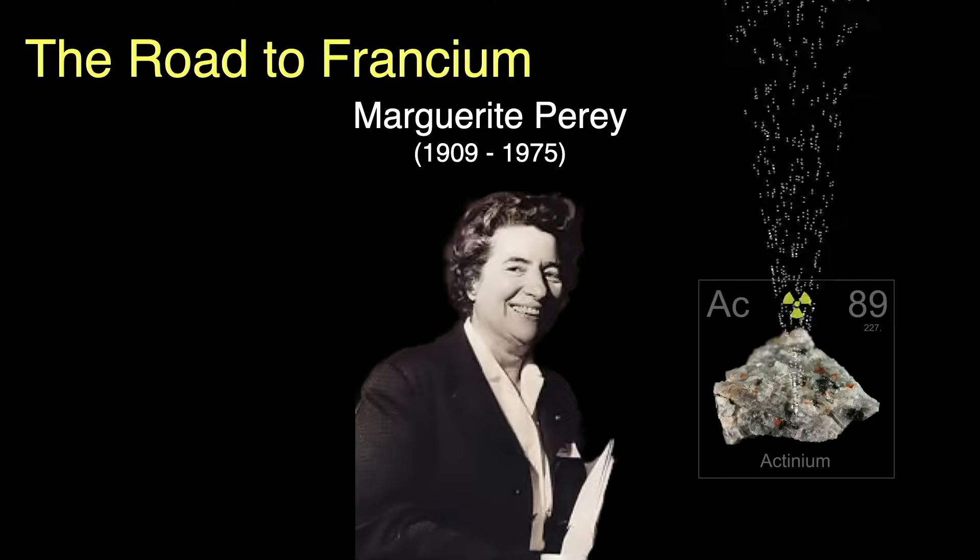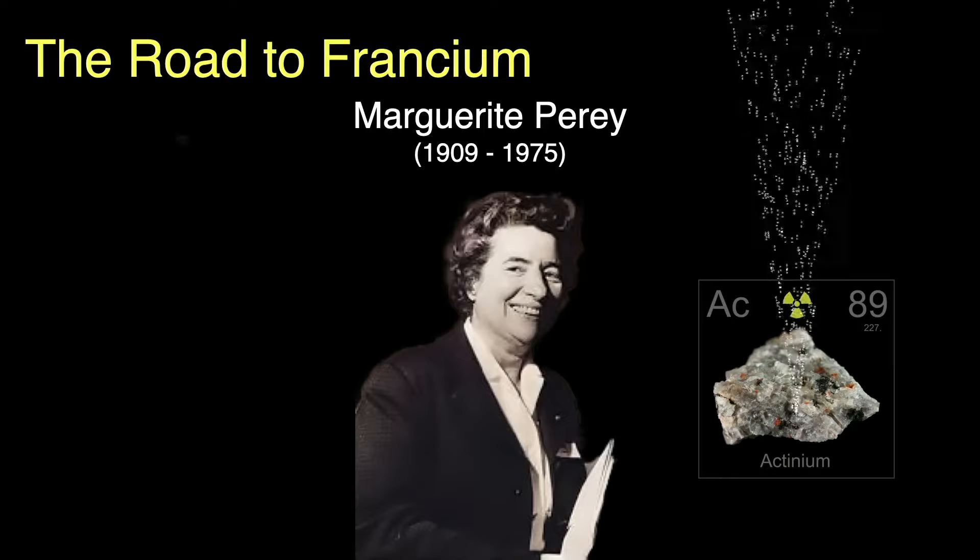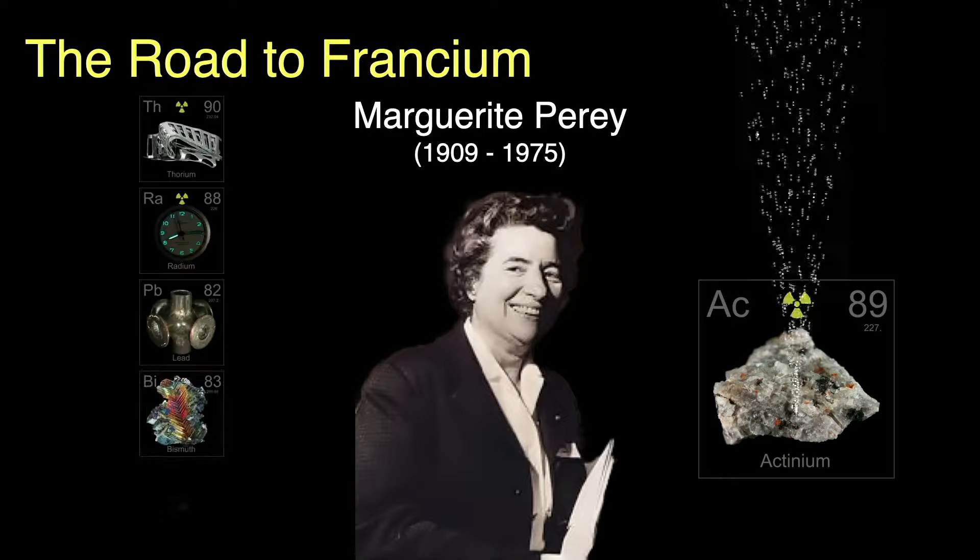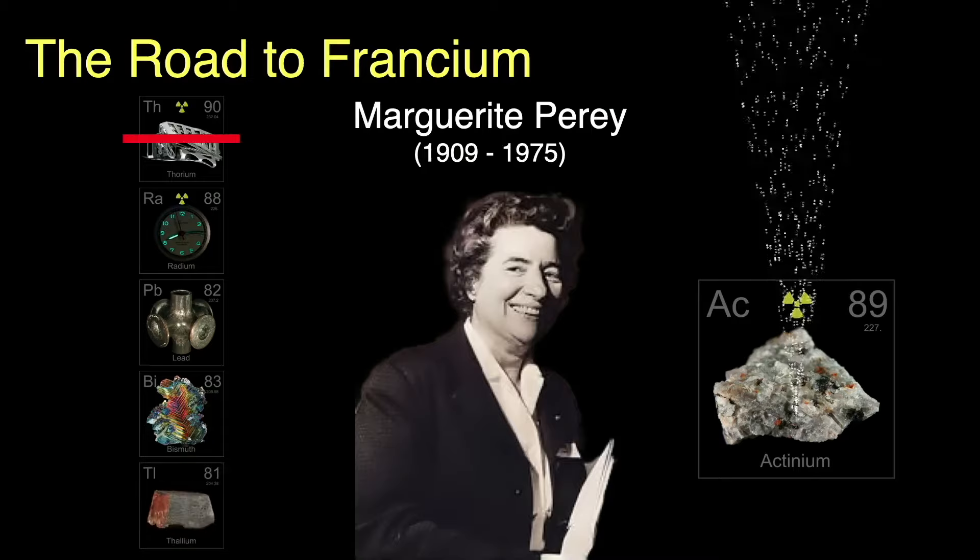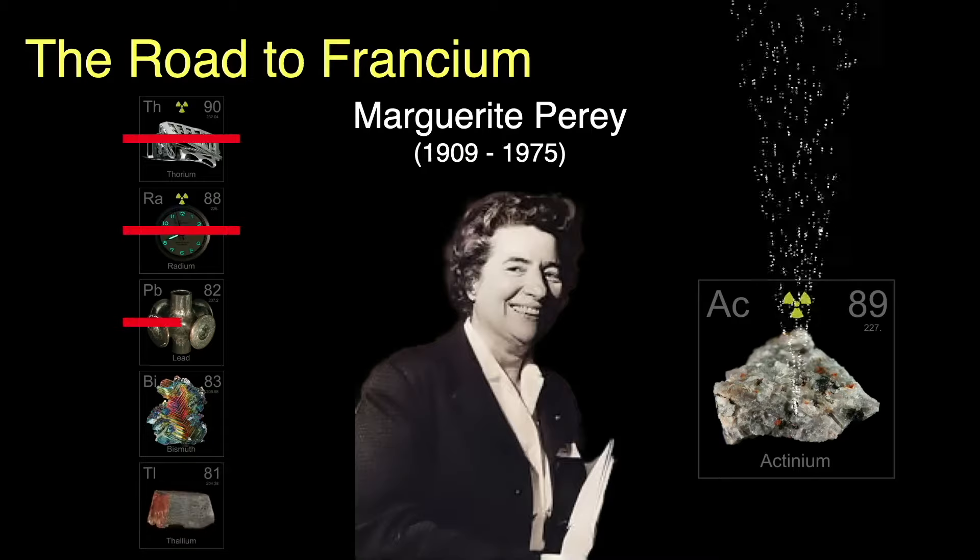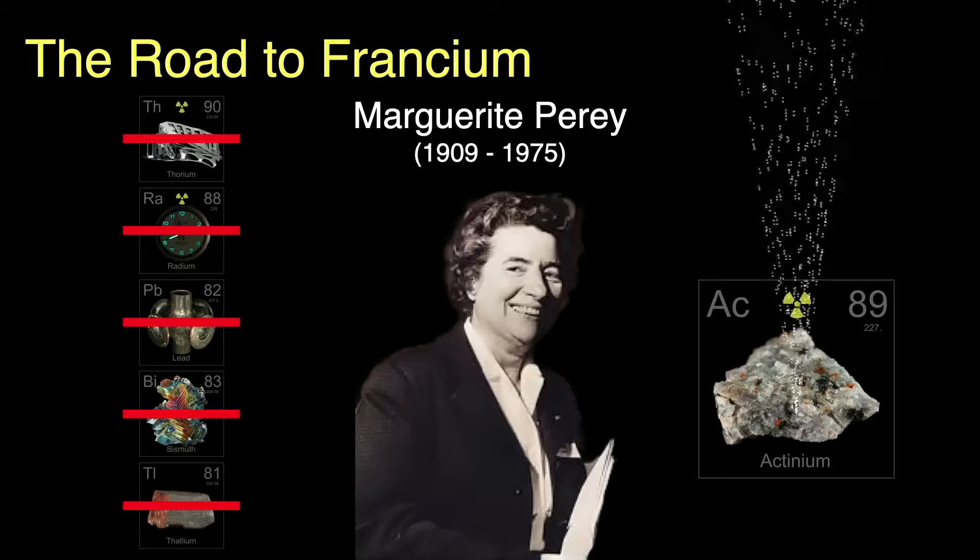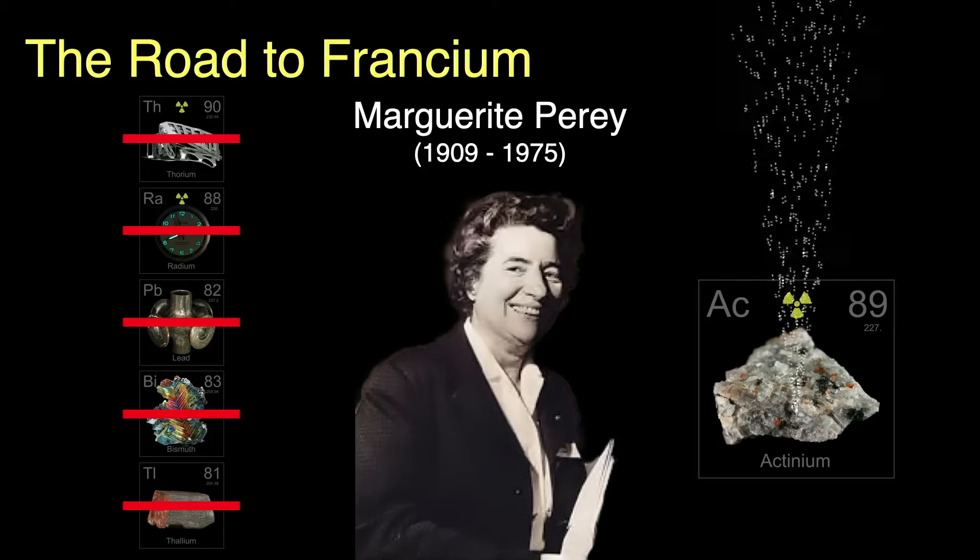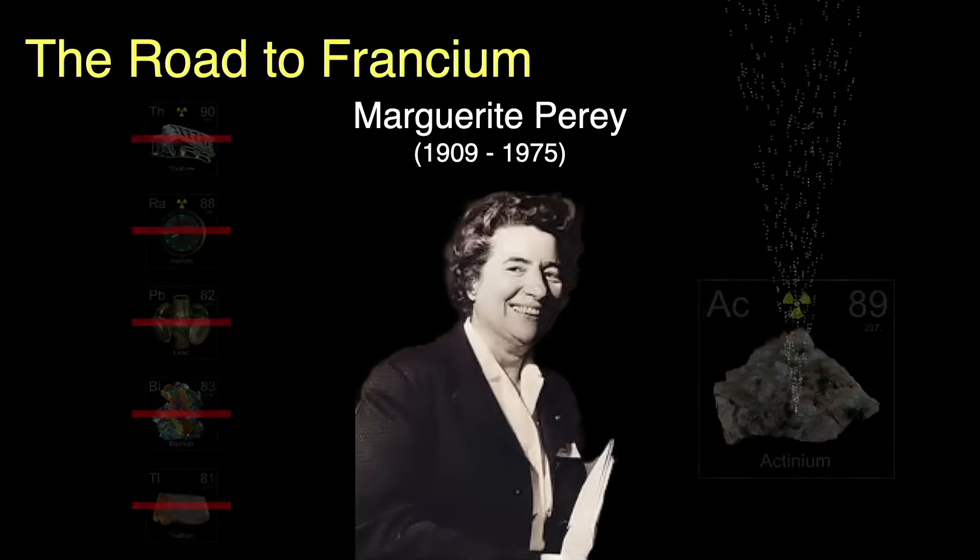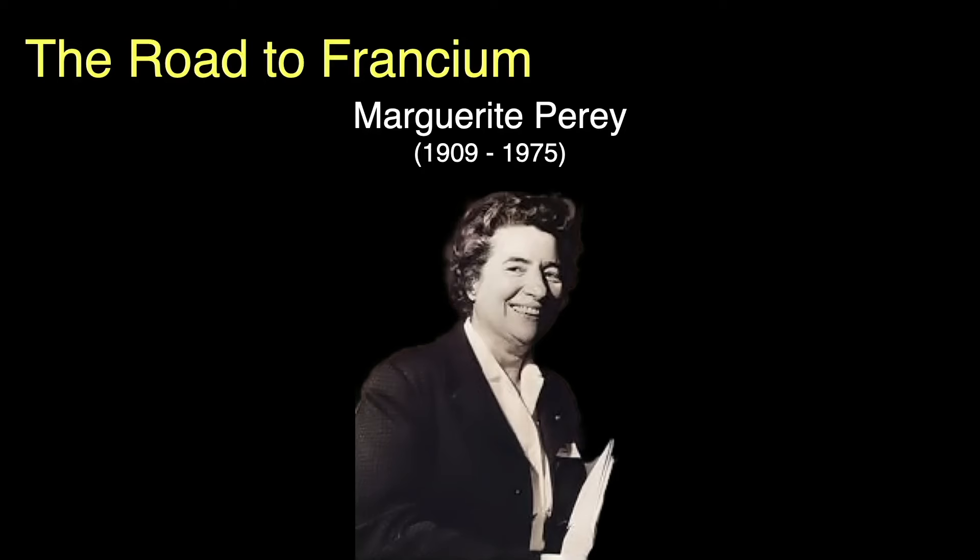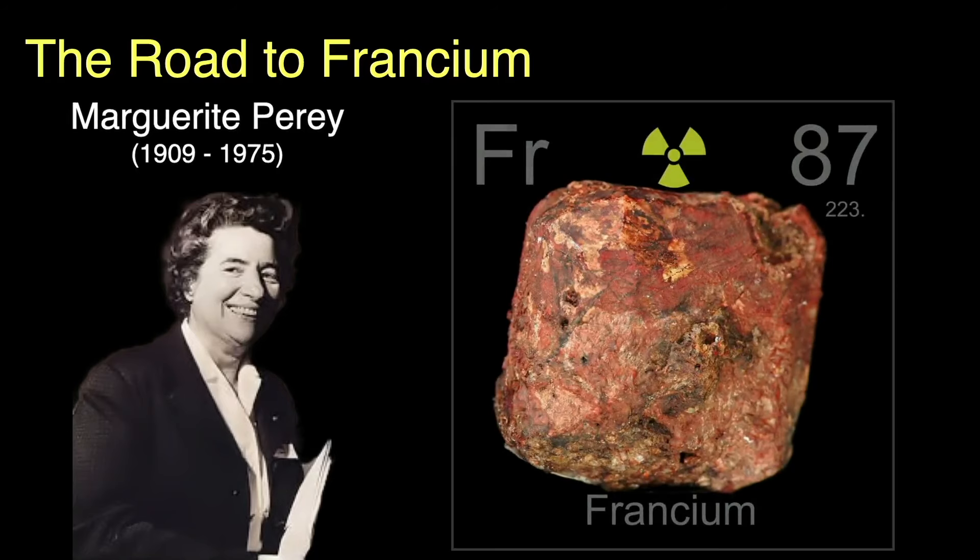Perey tested to be sure these decay products weren't from other radioactive elements known at the time: not thorium, radium, lead, bismuth, or thallium. The new element also acted like an alkali metal. She concluded, rightly, she was seeing a new element, number 87. After a couple false naming starts, she called the new element francium after her native country.